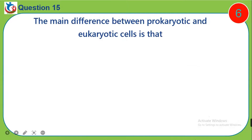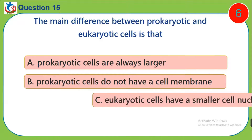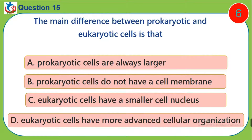Question 15. The main difference between prokaryotic and eukaryotic cells is that: A. Prokaryotic cells are always larger. B. Prokaryotic cells do not have a cell membrane. C. Eukaryotic cells have a smaller cell nucleus. D. Eukaryotic cells have more advanced cellular organization.